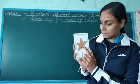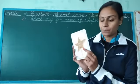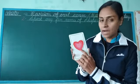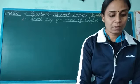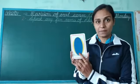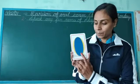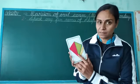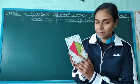Which shape is this? This is semicircle. Which shape is this? This is heart shape. Which shape is this? This is oval shape. Which shape is this? This is diamond shape.